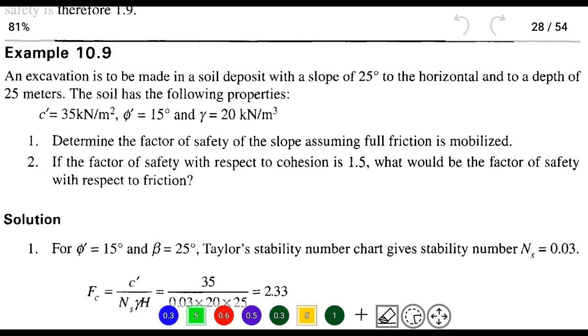Hello friends, welcome to Civil Engineering Exam. Today we're going to see a problem related to soil mechanics in the topic of slope stability. The question is: an excavation is to be made in a soil deposit with a slope of 25 degrees to the horizontal and to a depth of 25 meters.